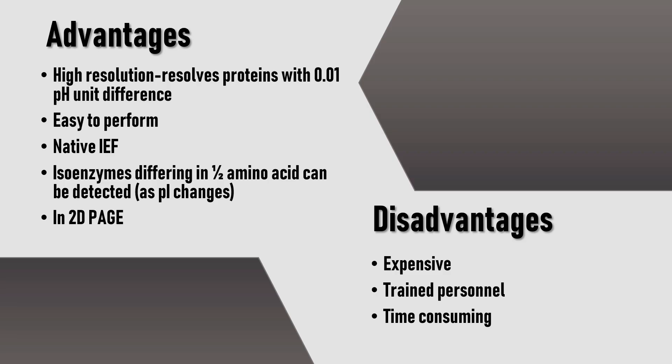There are many advantages of using isoelectric focusing. It can separate proteins with very high resolution, resolving proteins with a PI difference of only 0.01. It is easy to perform, and you can even perform native IEF without disrupting the native conformation of the protein. It can also separate isoenzymes differing in just one or two amino acids if those differences affect the overall charge. IEF also forms a major dimension in 2D-PAGE. Disadvantages include being expensive due to the use of ampholytes, time-consuming, and requiring trained personnel.